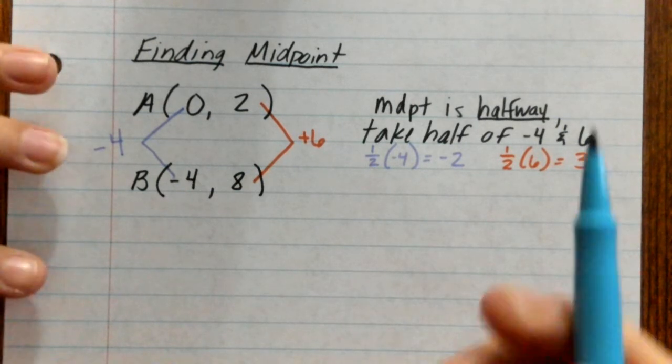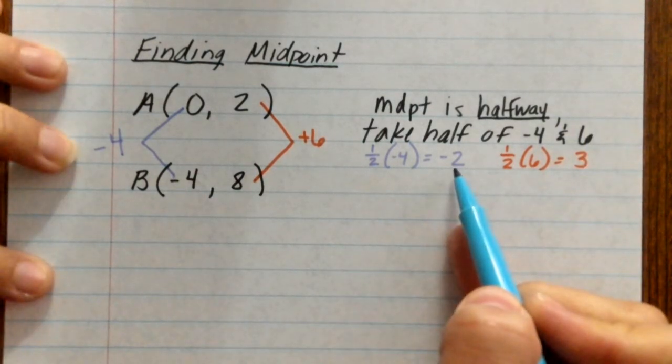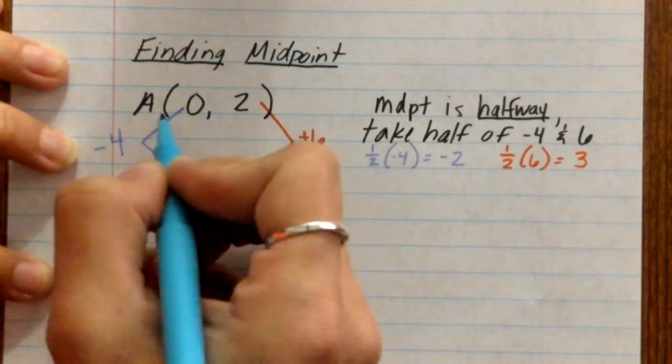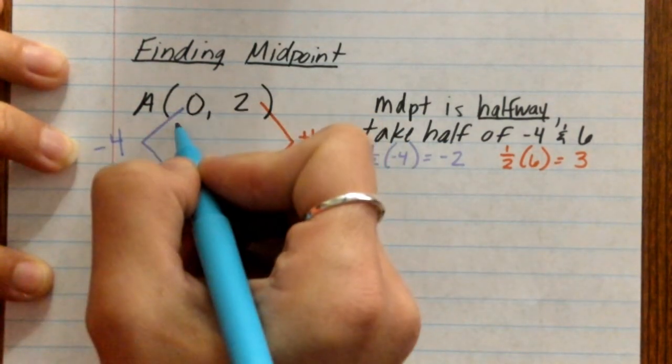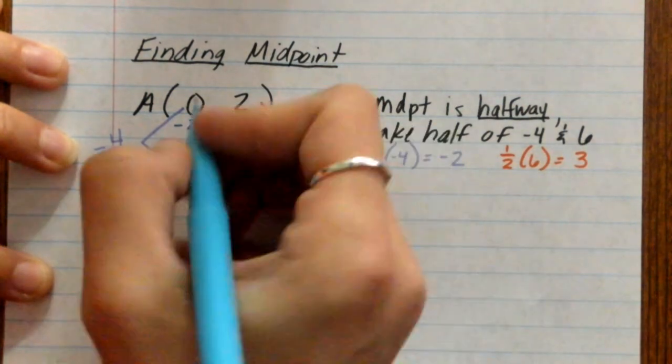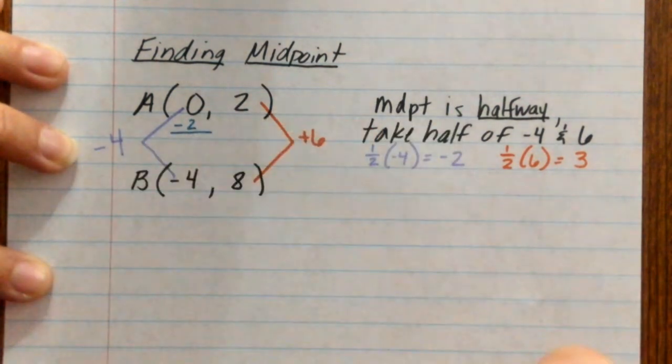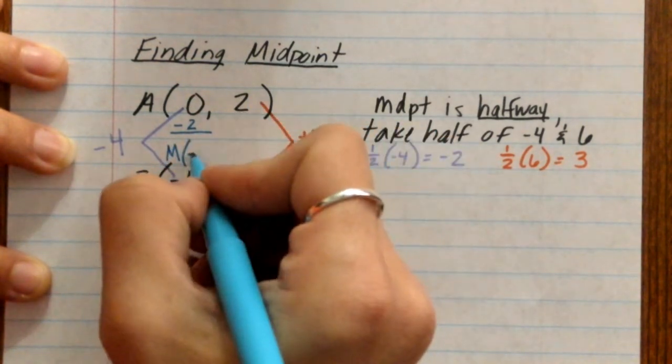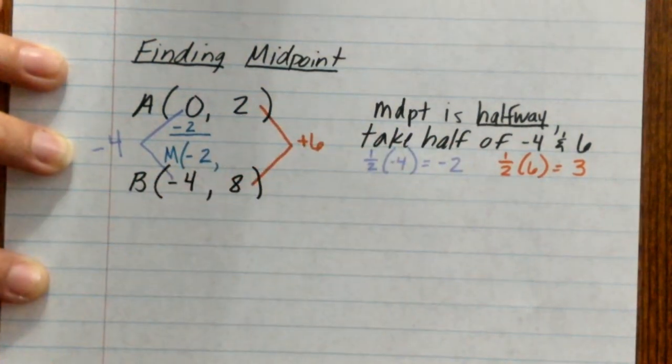What you have to do now is you have to take this distance from your original x. So instead of going negative 4, halfway would be negative 2. So, 0 minus a negative 2, put M for midpoint, it's going to wind up being a negative 2. That is your new x-coordinate.